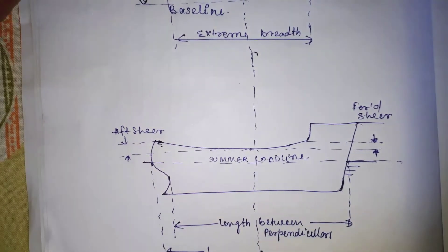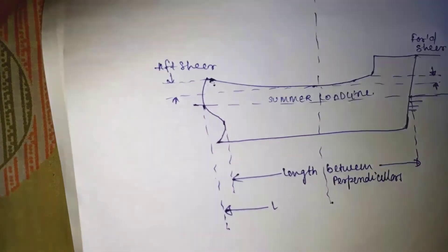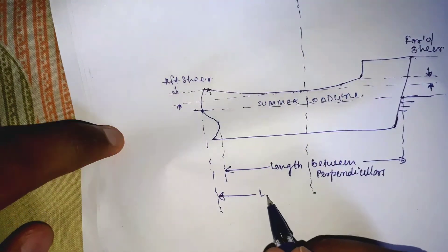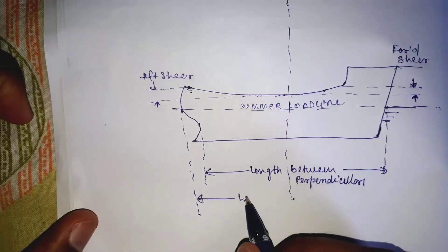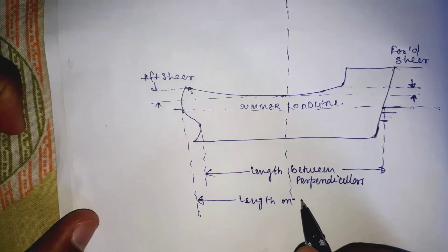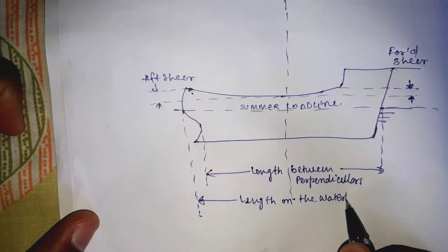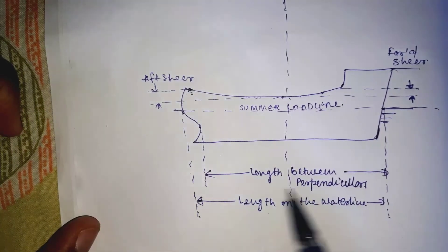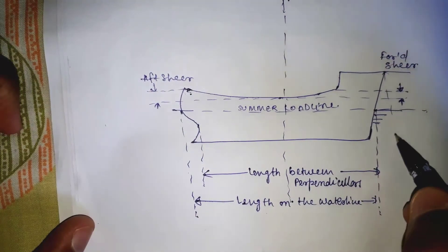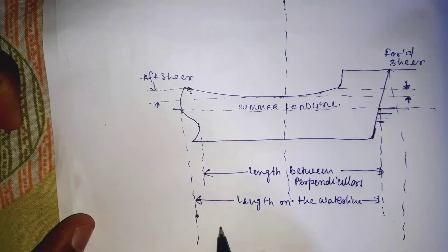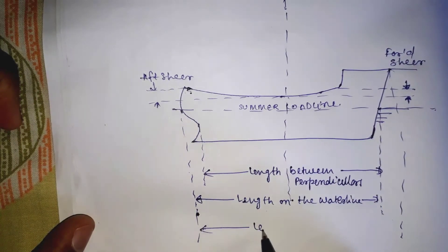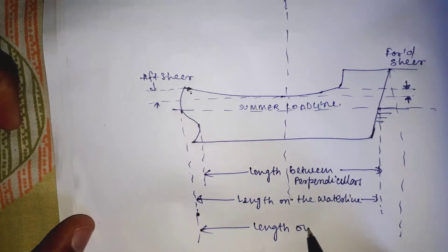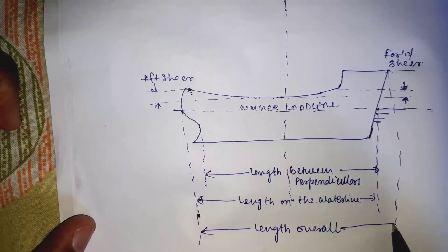where the forward side of the stem meets the summer load line. The length between perpendiculars is the length between the forward and the aft perpendicular, measured along the summer waterline. Length overall is the maximum length of the vessel measured from the extreme forward point of the vessel to the extreme aft point.